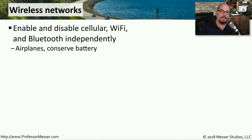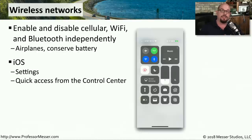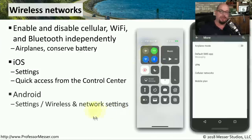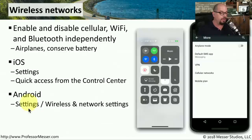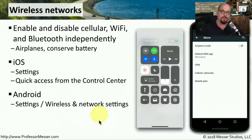Even if you're not on a plane, you may want to have control over which wireless networks are in use. For example, if you're not using Bluetooth devices, you may want to disable the Bluetooth functionality. In iOS, you can go to Settings to manually enable or disable these different networks, or use the Control Center that you can swipe down from the top of the screen. On Android, one common way is to go to Settings and then Wireless and Network Settings to control what networks you'd like to use.